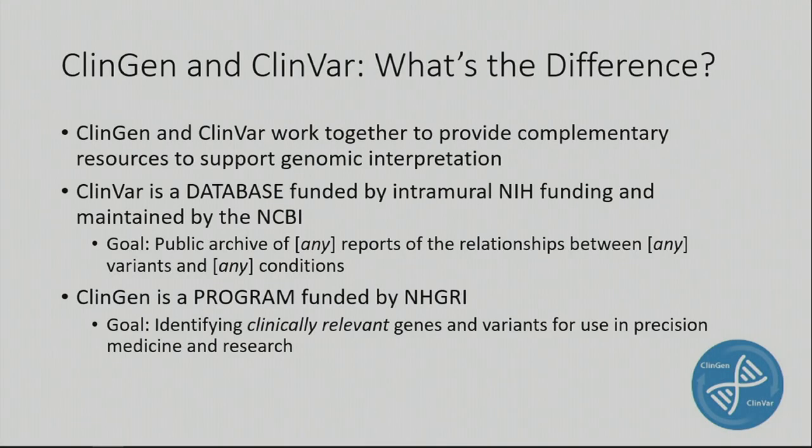ClinGen and ClinVar work together to provide a complementary resource to support genomic interpretation. ClinVar is a database funded by intramural NIH funding and maintained by NCBI, and its goal is to be a public archive of reports of the relationships between variants and conditions. ClinGen, on the other hand, is a program funded by NHGRI, and its goal is to identify clinically relevant genes and variants for use in precision medicine and research.